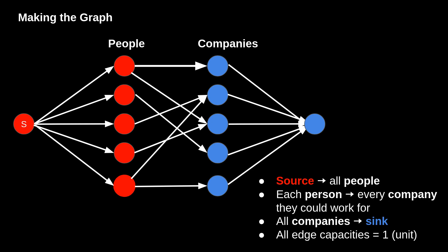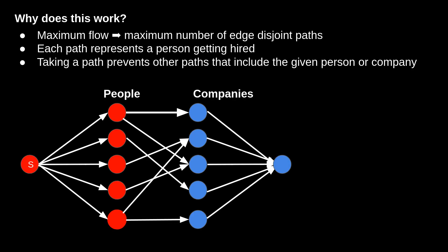If we make the graph connecting all people to the companies they're willing to work for, the additional edges we need are: connect the source to all people, and connect all companies to the sink — where by connect I mean add an edge of capacity one between them. If we make this graph and run flow on it, the maximum flow will actually be the maximum number of people that can be matched.